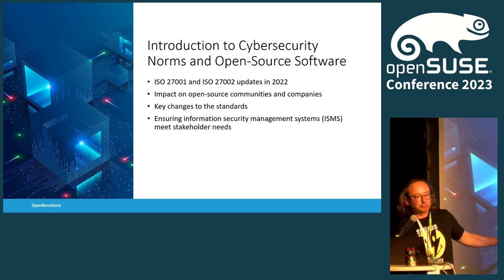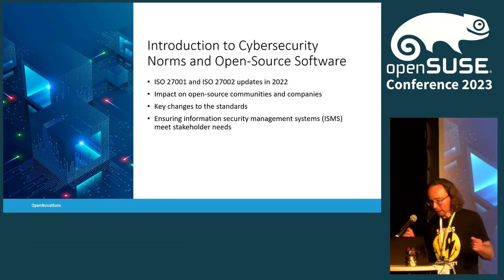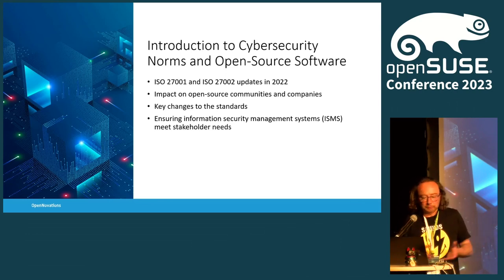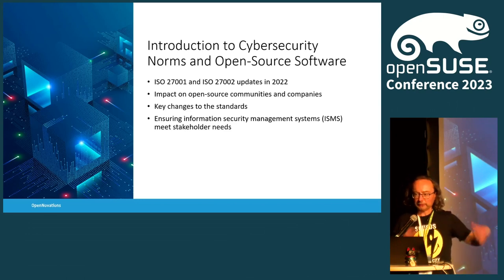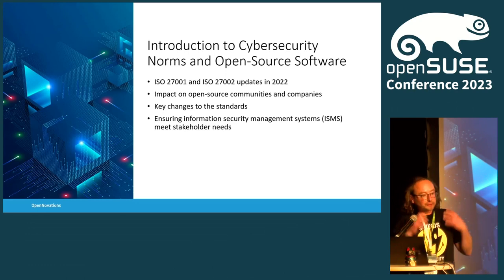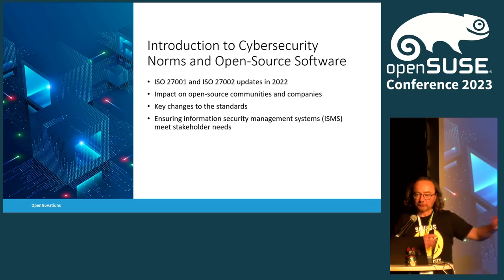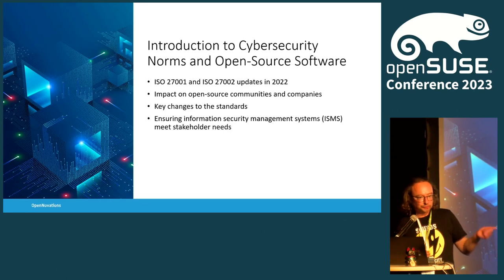There are also quite a number of national and more branch-specific variations of these norms. In the Netherlands, we have a specific NEN 7510 norm, which is essentially a combination of the 27001 and 27002, but strictly focusing on the medical and healthcare domain, including information exchange — cryptography of data in transit, data at rest, and all kinds of security controls.